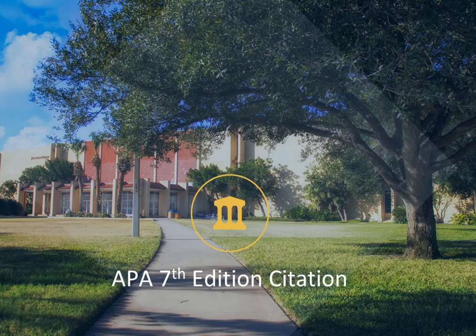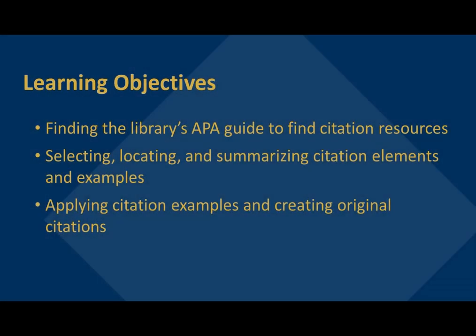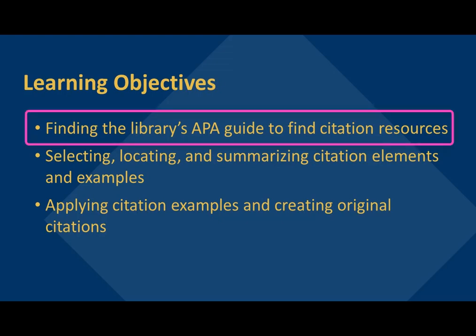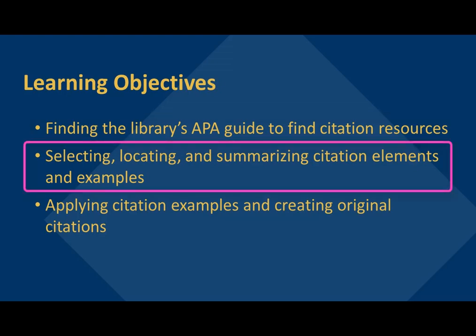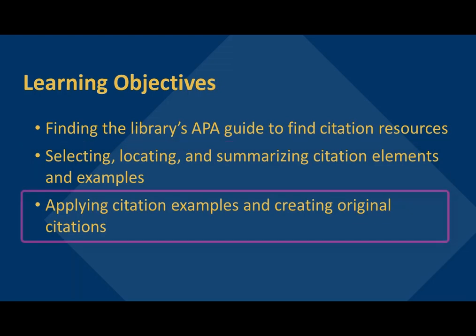APA Style 7th Edition is produced by the American Psychological Association and is typically used for education, psychology, and the sciences. This short citation video will cover three learning objectives: finding the library's APA guide to find citation resources; selecting, locating, and summarizing citation elements and examples with OWL Purdue; and applying citation examples and creating original citations.